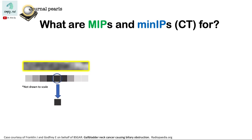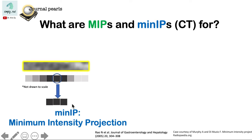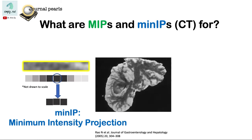If we do the opposite and only use the lower density pixels of this volume, we get a minimum intensity projection. This projection is useful for visualizing hypodense structures such as the biliary tree and the pancreatic duct.